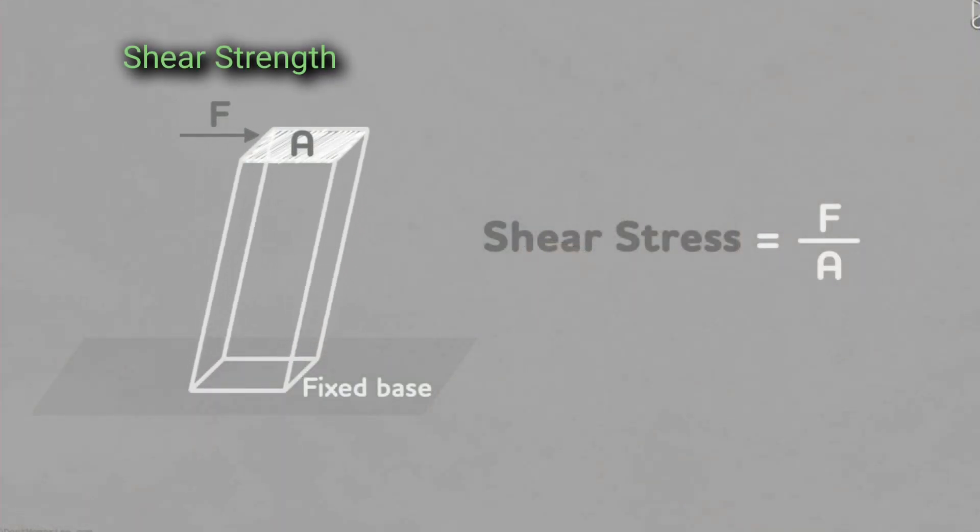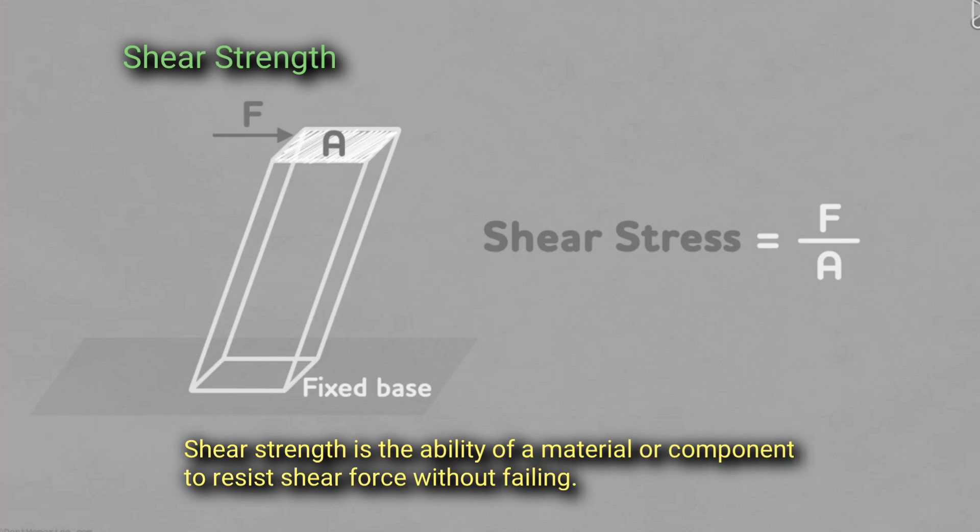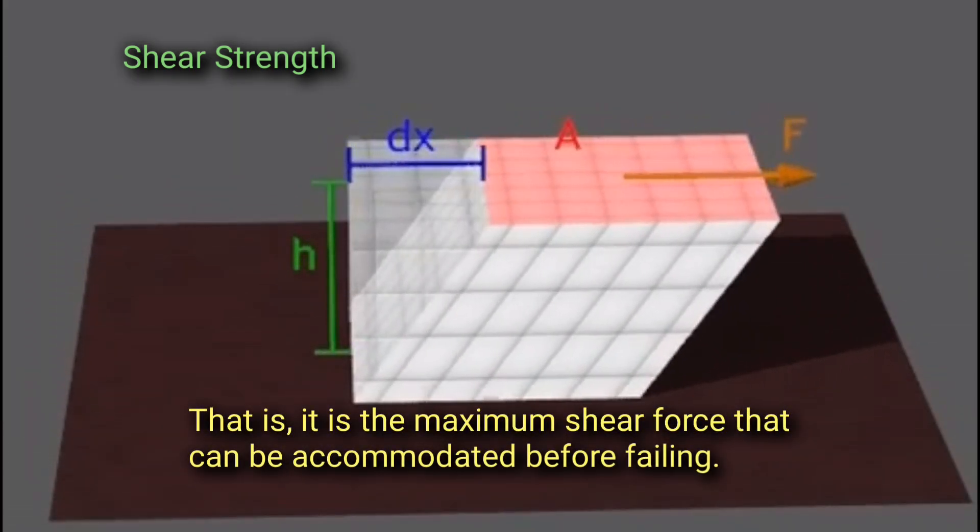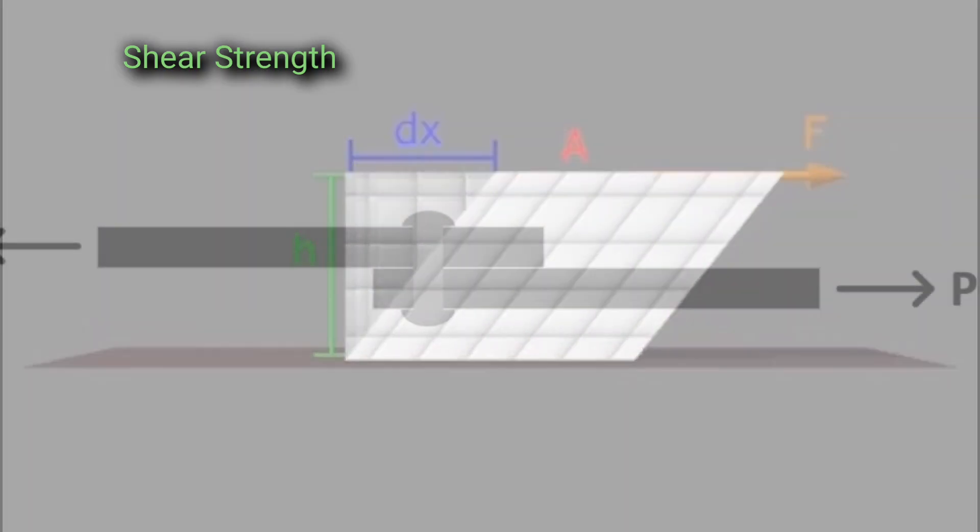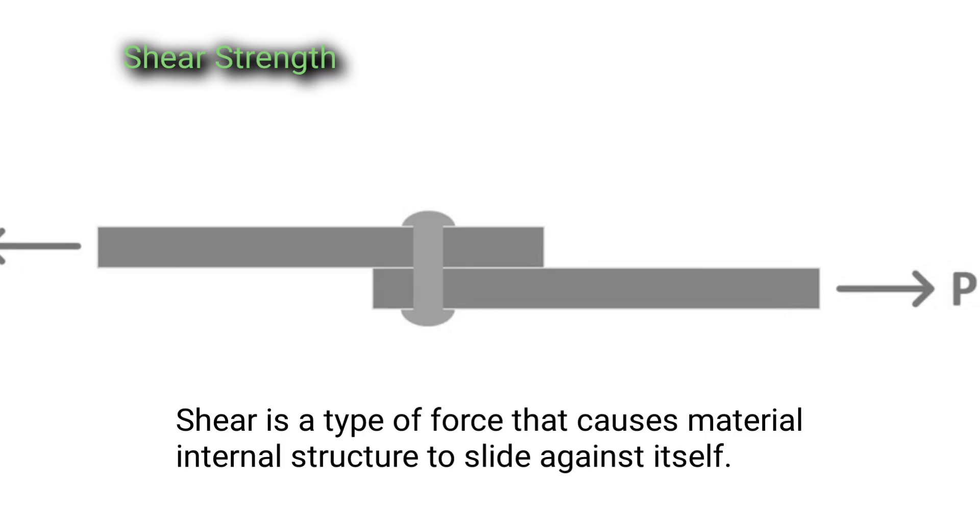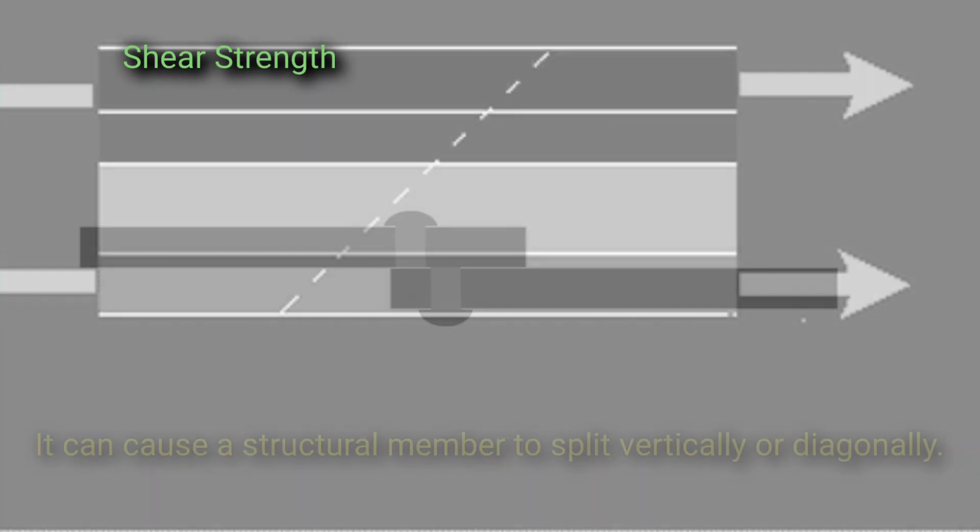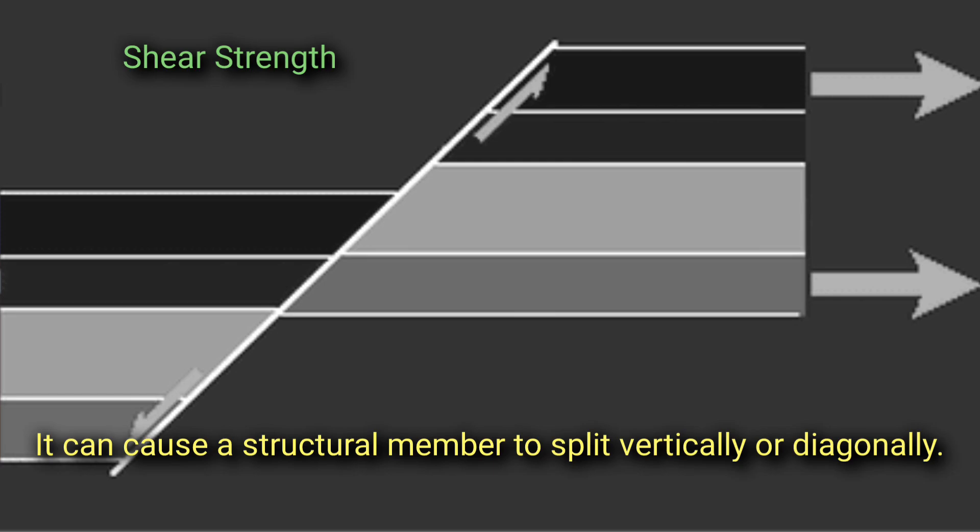Shear strength. Shear strength is the ability of a material or component to resist shear forces without failing. That is, it is the maximum shear force that can be accommodated before failing. Shear is a type of force that causes material internal structure to slide against itself. It can cause a structural member to split vertically or diagonally.